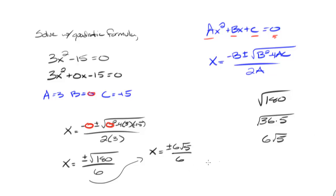And then to simplify this, I would just cancel the common factor of 6 in between these to get a final answer of x equals plus or minus the square root of 5.